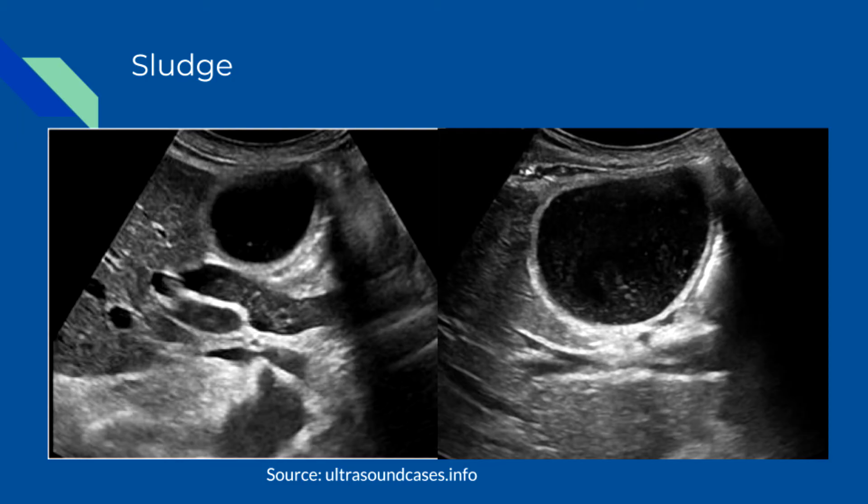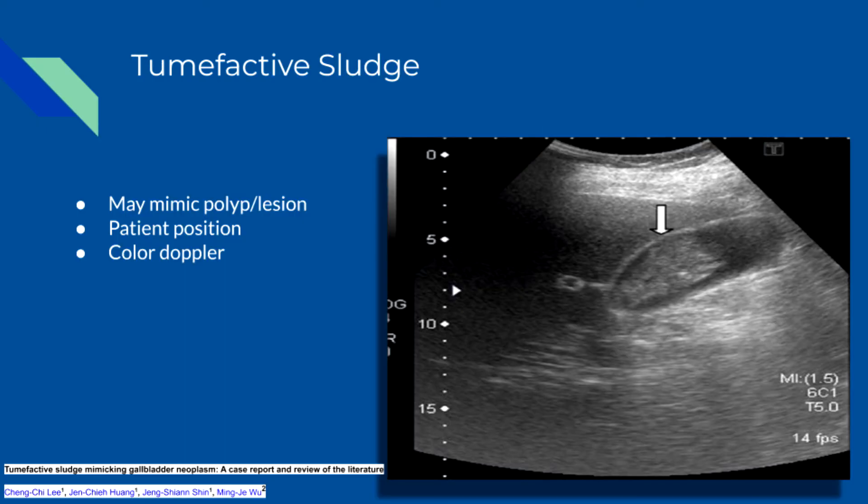Sludge may aggregate into clumps, which may simulate masses or polyps. This is known as tumefactive sludge. In these cases, patient position won't change it, but you can add color Doppler and show that there's no blood flow within the sludge.